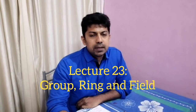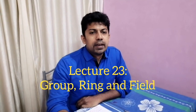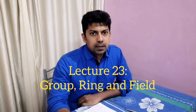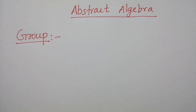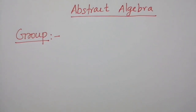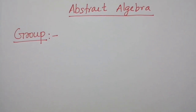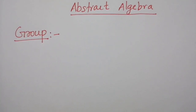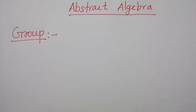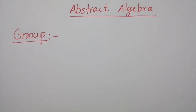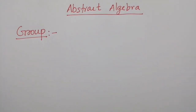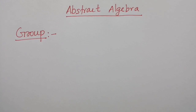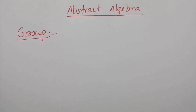Hello everyone. So far we discussed about various concepts of information theory. Today onwards we will discuss about the concepts required for coding theory. Group, ring and fields are fundamental elements of a branch of mathematics known as abstract algebra or modern algebra. In abstract algebra we are concerned with sets on whose elements we can operate algebraically — that is, we can combine two elements of a set to obtain a third element of the set.